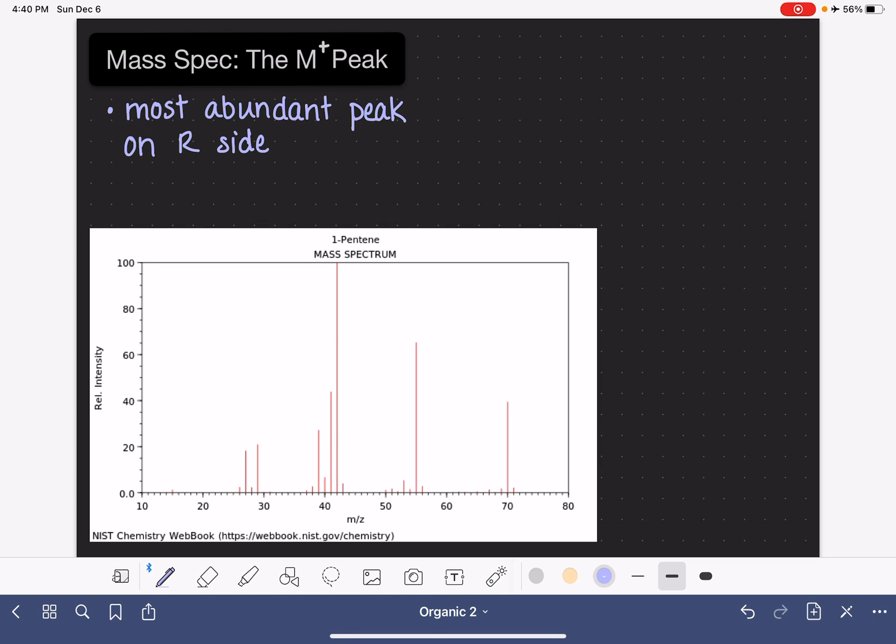Students read 'most abundant peak' and just latch on to that part of the definition without following through for the rest. The M plus peak is not the most abundant peak. Abundance is intensity on the vertical axis here. The M plus peak is not the most abundant peak.